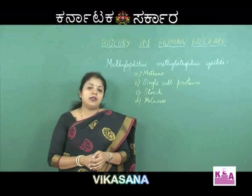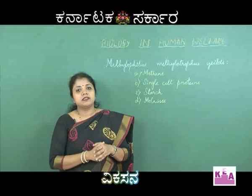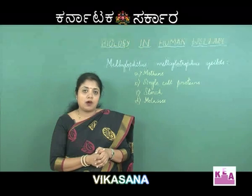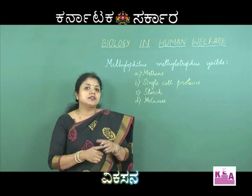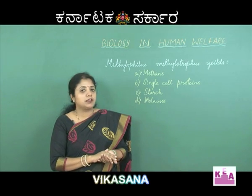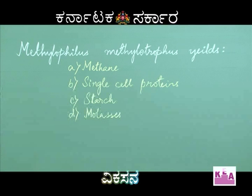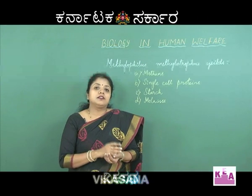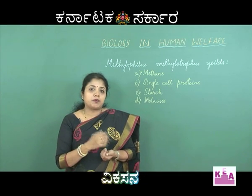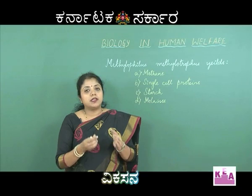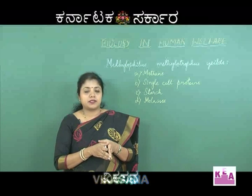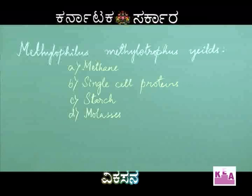This is a kind of question where you are expected to remember the examples under each topic, especially the technical term or the scientific name of the organism. Here you have studied the organism Methylophilus methylotrophus under the topic single cell proteins. Single cell proteins are the mixed proteins which are harvested from a particular organism, mostly algae. The classical example is Spirulina; the other example is Methylophilus methylotrophus.